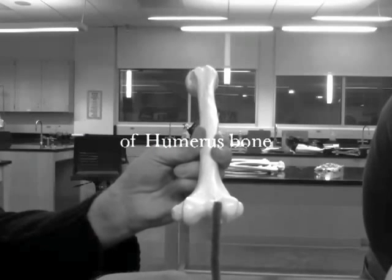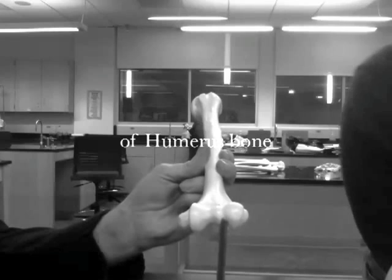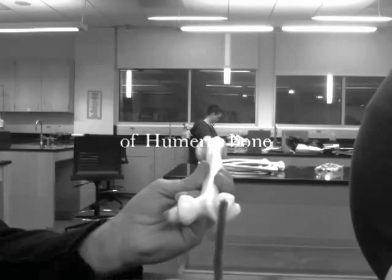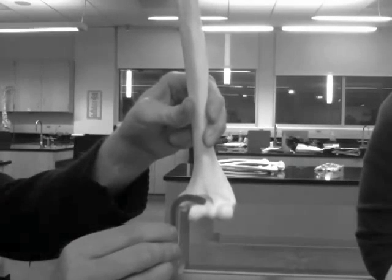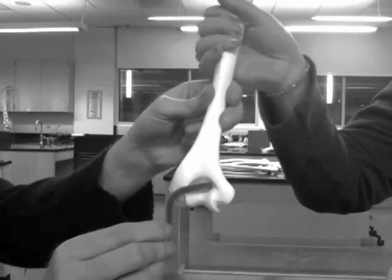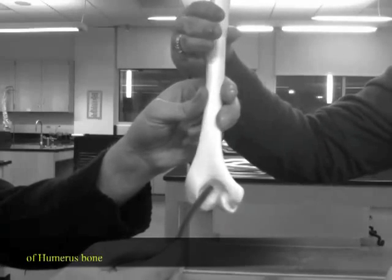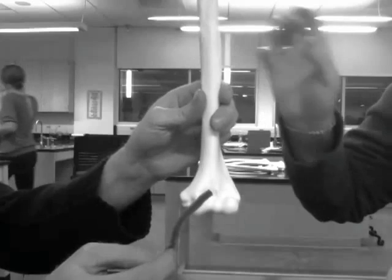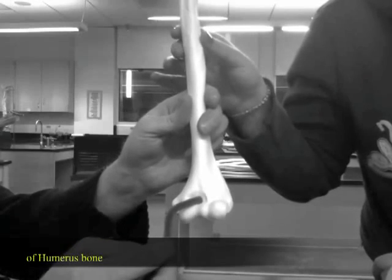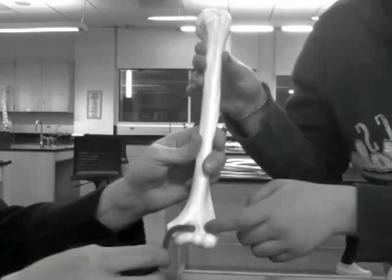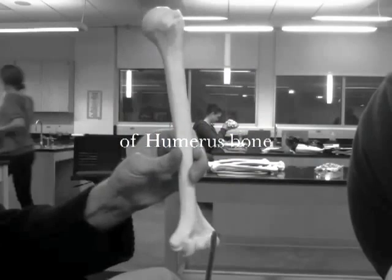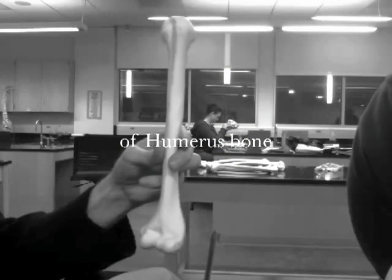That indent right there, I think right here, capitulum. Those on the back of the bone, olecranon fossa. Coronoid fossa, and radial fossa. That's all we need to know for the humerus.